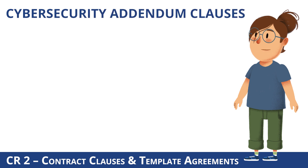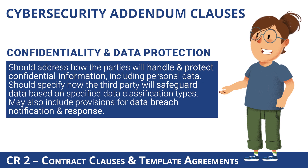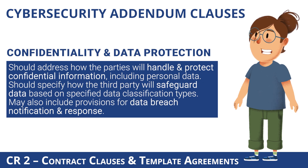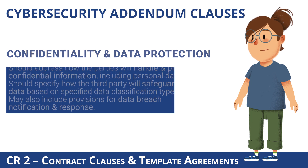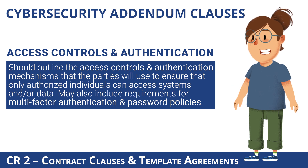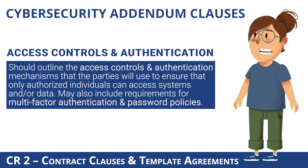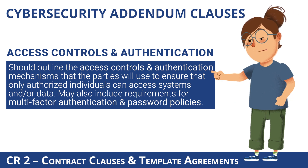A Cybersecurity Addendum may include clauses such as, but not limited to: confidentiality and data protection — this clause should address how the parties will handle and protect confidential information, including personal data, and specify how the third party will safeguard data based on specified data classification types, and may include provisions for data breach notification and response. Access controls and authentication — this clause should outline the access controls and authentication mechanisms to ensure only authorized individuals can access systems and/or data, and may include requirements for multi-factor authentication and password policies.